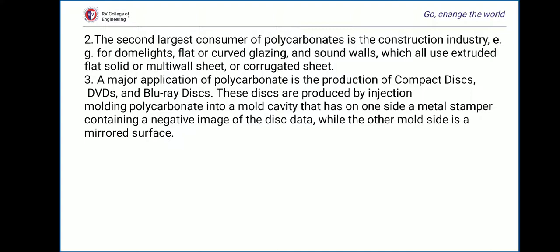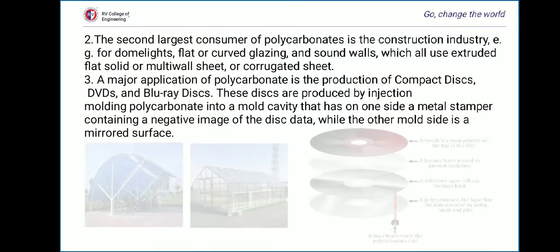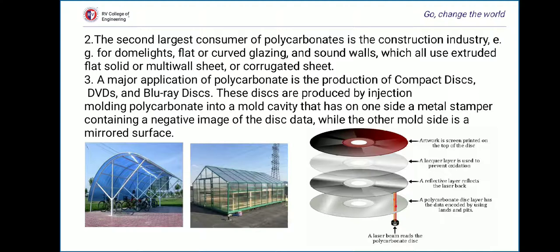The second largest consumer of polycarbonate is the construction industry — for example, it is used for dome lights, flat or curved glazing, and sound walls using extruded flat solid, multi-wall sheet, or corrugated sheet. A major application of polycarbonate is the production of compact discs, DVDs and Blu-ray discs. These discs are produced by injection molding polycarbonate into a mold cavity that has on one side a metal stamper containing a negative image of the disc data, while the other mold side is a mirrored surface.